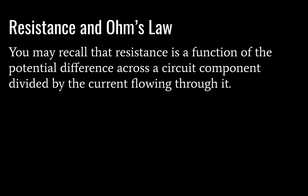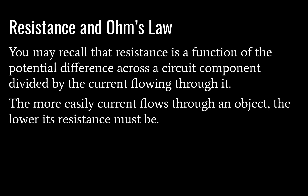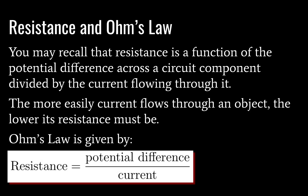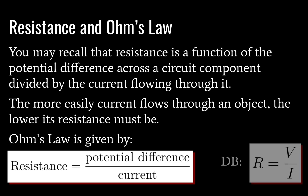Next we need to look at resistance in relationship with Ohm's law. Remember that resistance is a function of the potential difference across the circuit component divided by the current flowing through it. All components have at least a little resistance, and if you take the potential difference across that component and divide it by the current, you get your resistance. The more easily current flows through an object, the lower its resistance must be. Ohm's law — which you'll recall from topic 5 — is given by R equals V divided by I, as found in your data booklet.